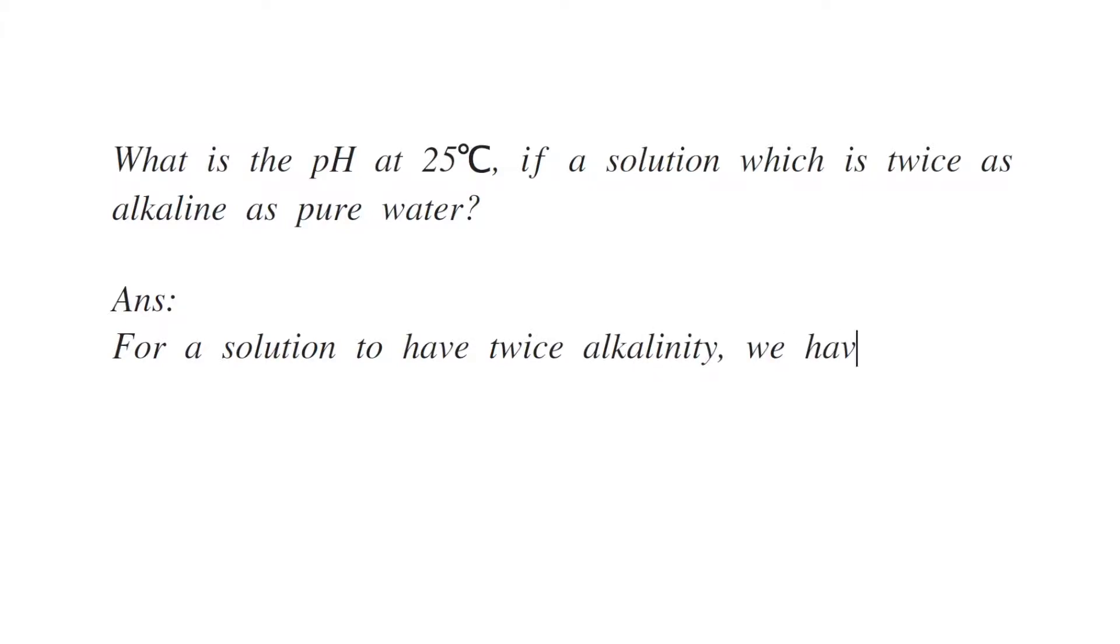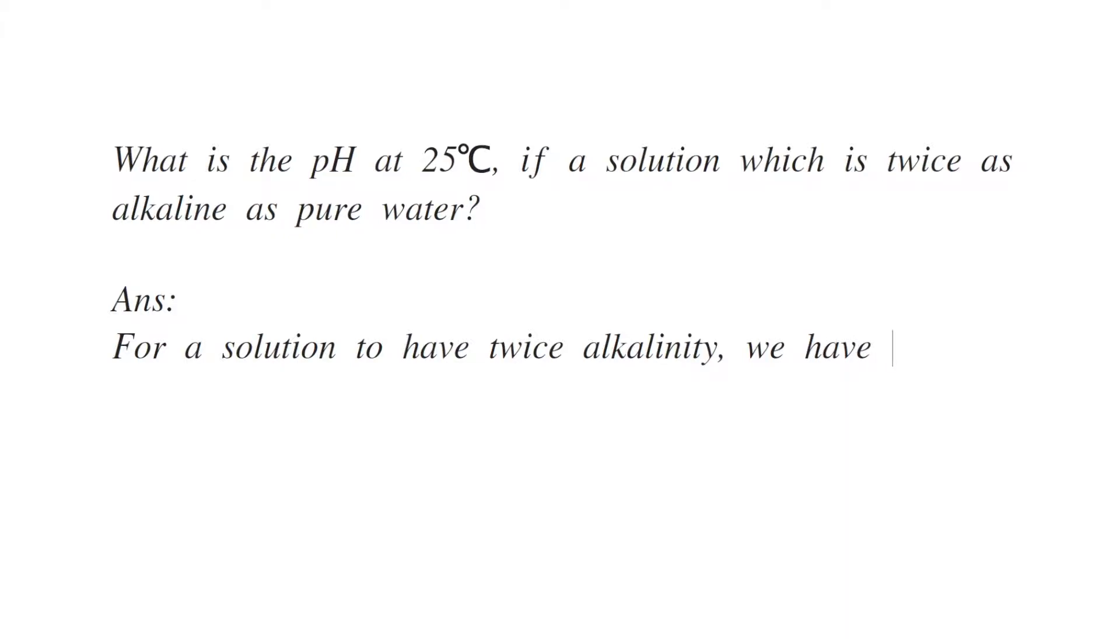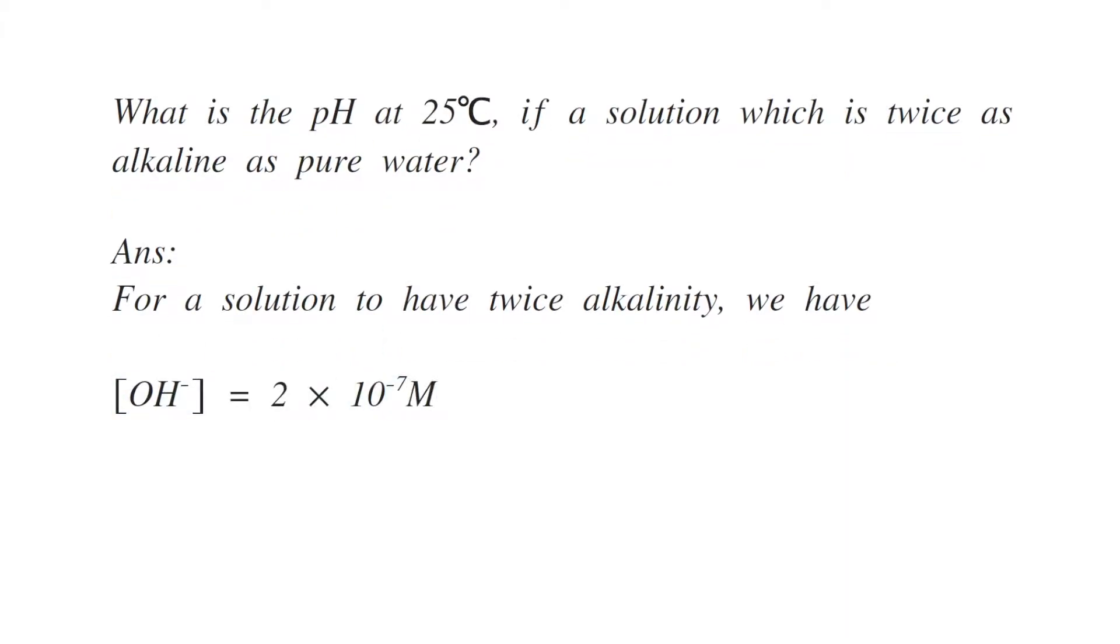So for a solution to have twice alkalinity, we have OH minus is equals to 2 times into 10 to the power minus 7 moles.